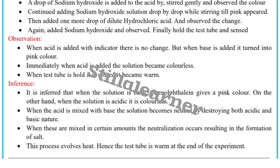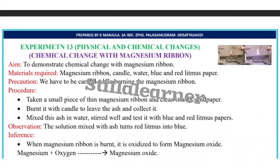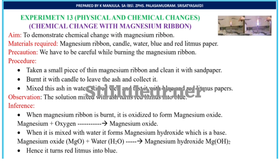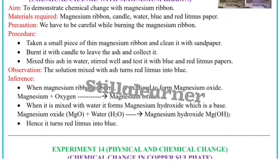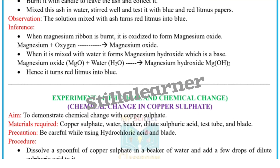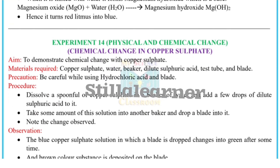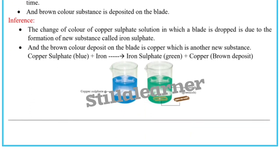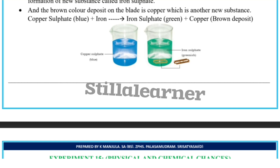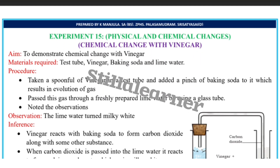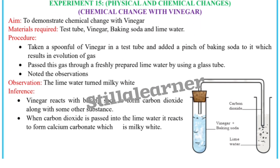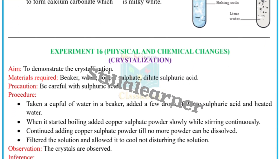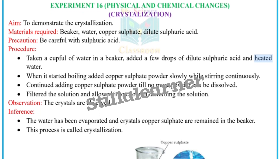Experiment number thirteen is physical and chemical changes: chemical change with magnesium ribbon. Experiment number fourteen is physical and chemical changes: chemical change in copper sulfate. Experiment number fifteen is physical and chemical changes: chemical change with vinegar. Experiment number sixteen is physical and chemical changes: crystallization.